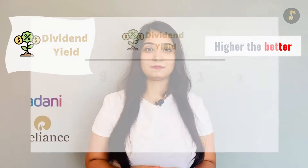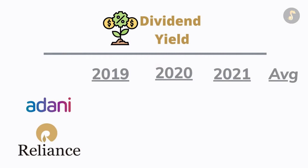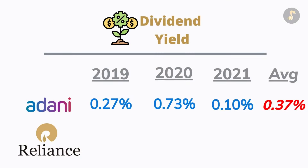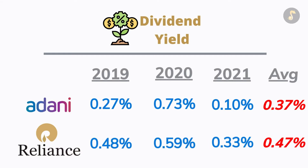The sixth category on the list is dividend yield. Dividend yield ka assessment criteria hai again higher the better. Adani Enterprises has given an average dividend yield of 0.37%, whereas Reliance has given an average dividend yield of 0.47% in the last three years, making Reliance a better pick under this category.